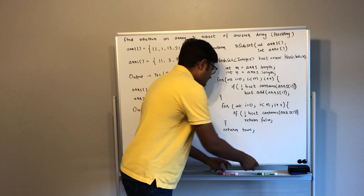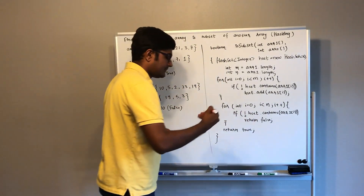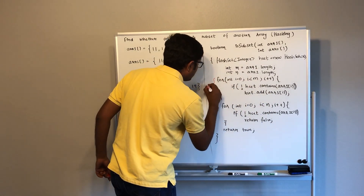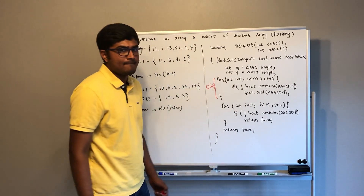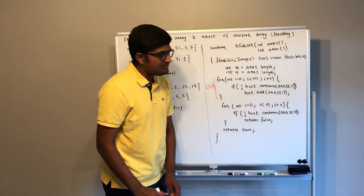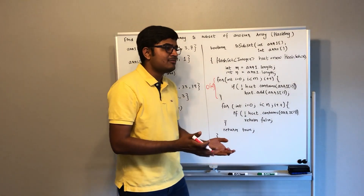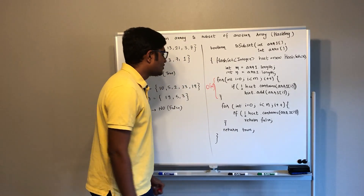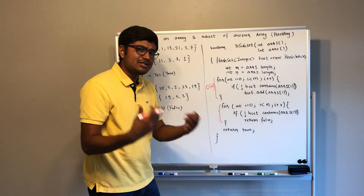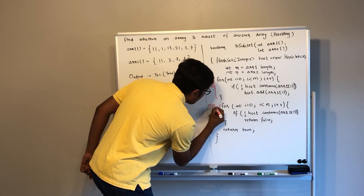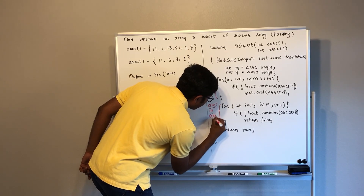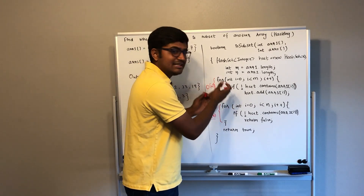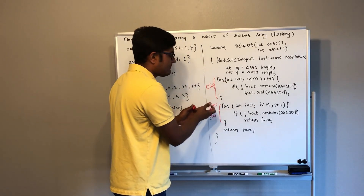Let's see the time complexity here. We iterate through all the elements of array 1, so the time complexity is O(n). And in this case we also iterate through all the elements of array 2. It will be the minimum of M or N because the hash set will not have all the elements. For the worst case scenario we assume it will be O(m) or O(n), but either way the complexity remains linear.